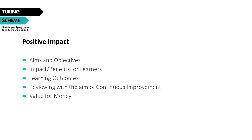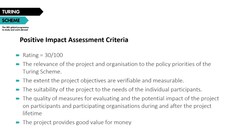The final question in the Positive Impact section asks how the project presents value for money for the taxpayer. Here you should detail any economic benefit that the project provides to both the organisation and the participants, and explain if and how Turing will open up new opportunities. This section is worth 30 out of 100 marks. I would strongly recommend reviewing the assessment criteria in the programme guide before you start writing, as it shows what the assessors are looking for.